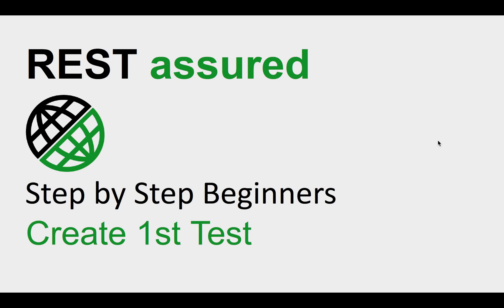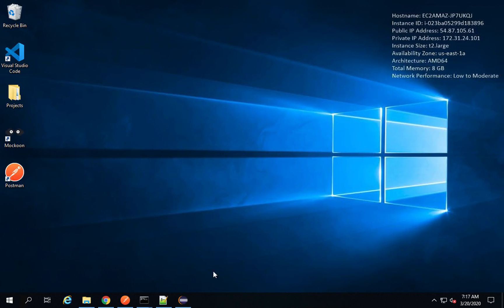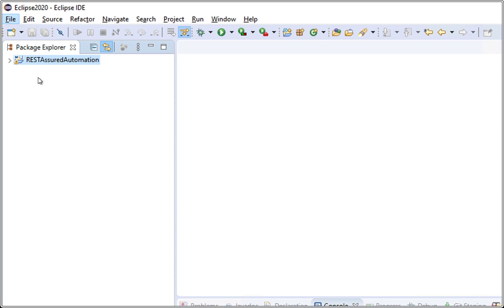Hello and welcome to this session. In the last session, we created our project so that we can start testing with REST Assured. In this session, we will create our first test. Step number one is we will go to our project that we created in the last session and create a class inside our project. I will go to Eclipse, and here is the project we created.